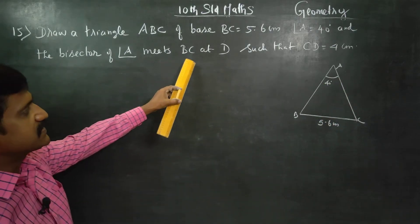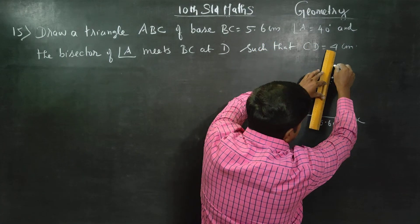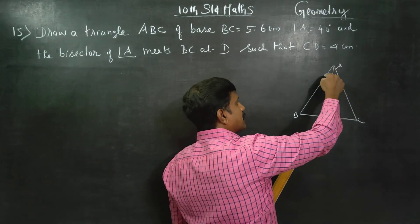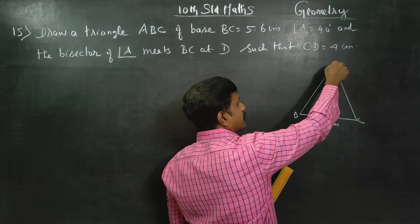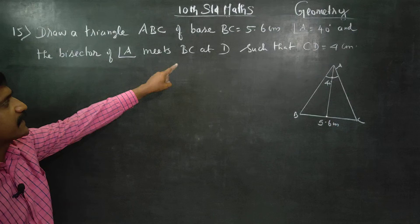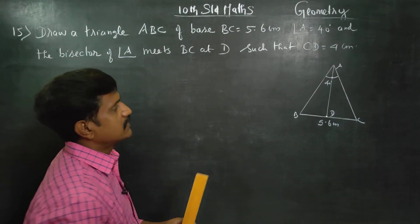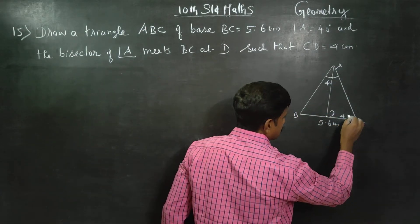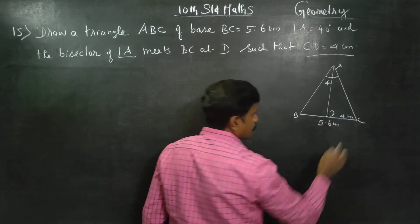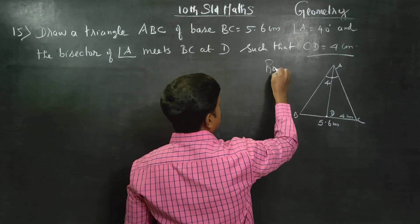The bisector of the angle A meets at D. Bisector means the line that divides into half, the angle bisector that divides into half meets BC. At which point does it meet? At D point it meets. Such that CD is equal to 4 cm. CD measurement is 4 cm. This is your rough diagram. This is your rough diagram.